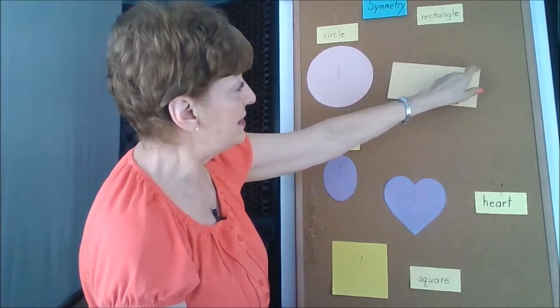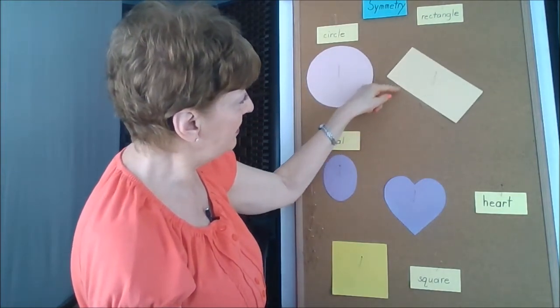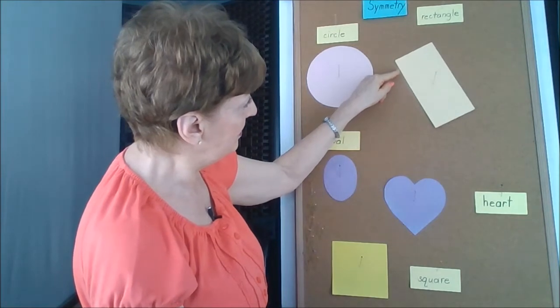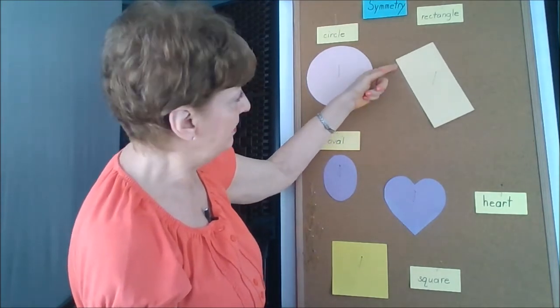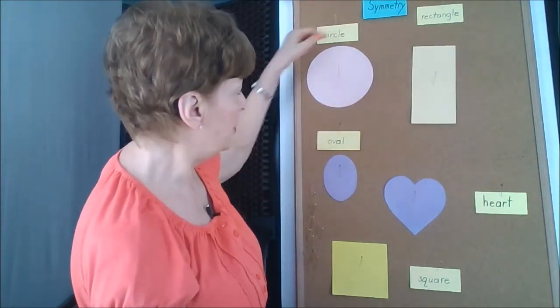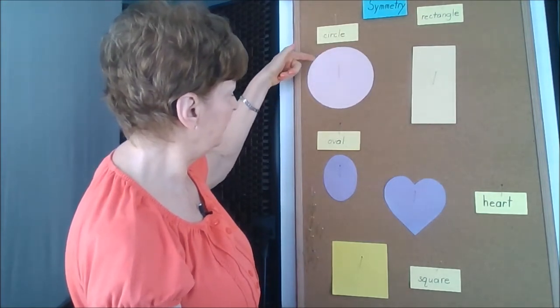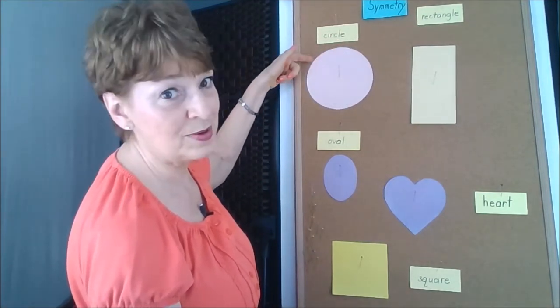So sometimes the rectangle can look like this, and sometimes the rectangle can look tall. It can even look slanted. But the circle always looks like a circle, no matter how it's rotated.